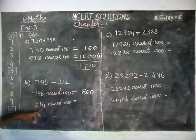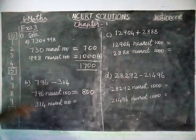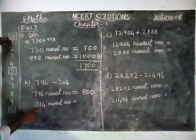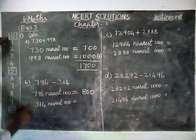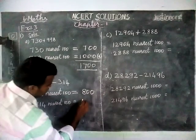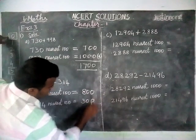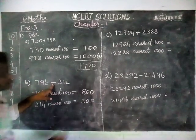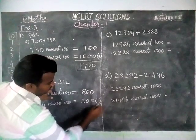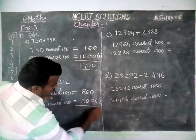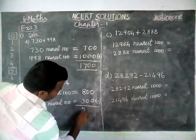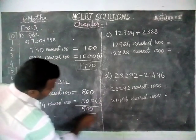And next, 314. The 10th place is 1. When 1 is coming, previous 100 only we have to choose. Previous 100 is 300. And we have to find the difference, so we are subtracting. We are getting the answer 500.